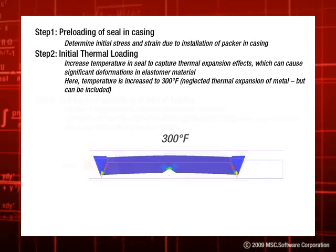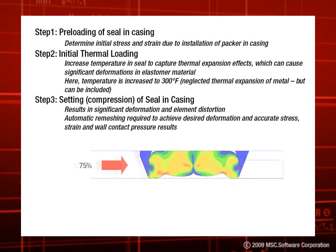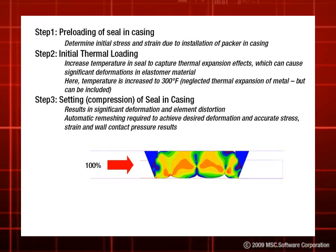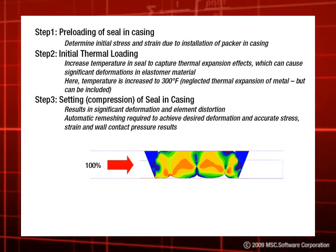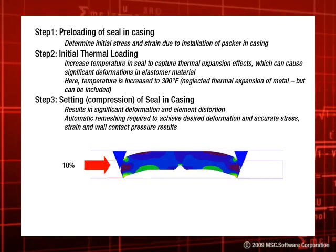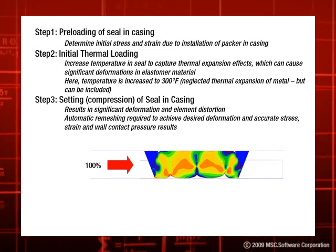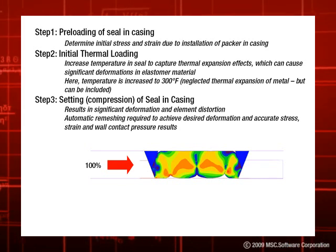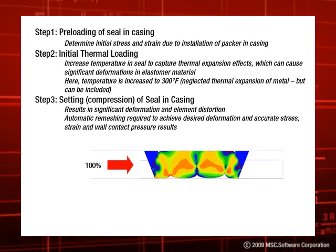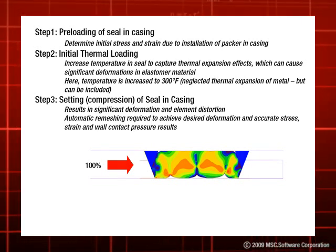We now begin the setting, or the compression of the seal into the casing. A force is applied to the upper cone that will compress the packer element against the casing wall. As the packer element compresses, it will fill the volume between the casing walls. MARC's contact algorithms allow automatic contact detection between all of the components, including any self-contact. This is important as the packer element can fold and buckle and may contact itself during the setting. The compression stage also results in significant deformation of the packer, and during this deformation the finite elements can become badly distorted, which can significantly reduce accuracy and would very likely result in lack of convergence as well.